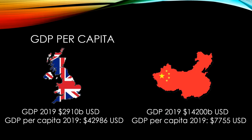You may have heard the expression GDP per capita. GDP per capita means the GDP per person within the country. This gives us the opportunity to compare countries that have very dissimilar populations. We can see that while the GDP of China far exceeds the GDP of the United Kingdom, when we look at GDP per capita, it is far higher in the United Kingdom than it is in China.